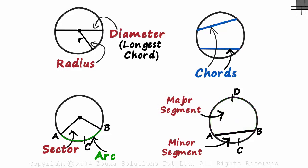And similarly in the previous figure, this one is a minor sector and this one a major. The green arc ACB is a minor arc and the remaining portion of the boundary is the major arc.